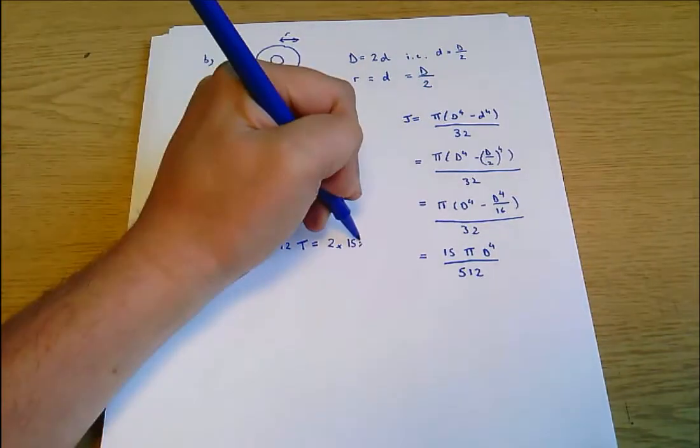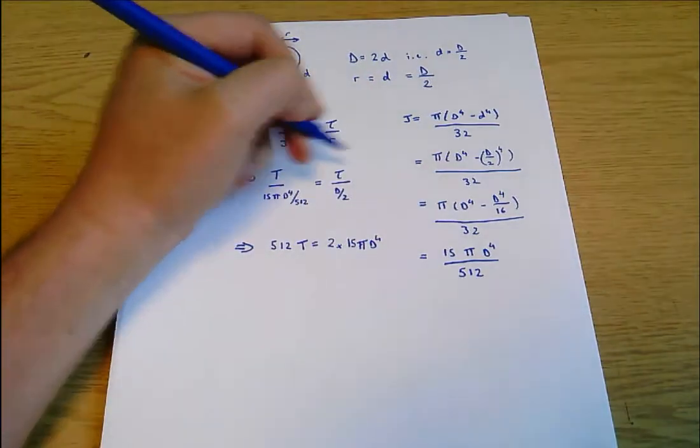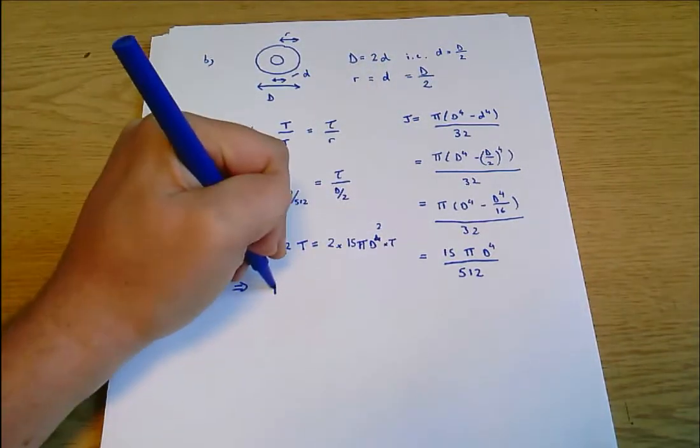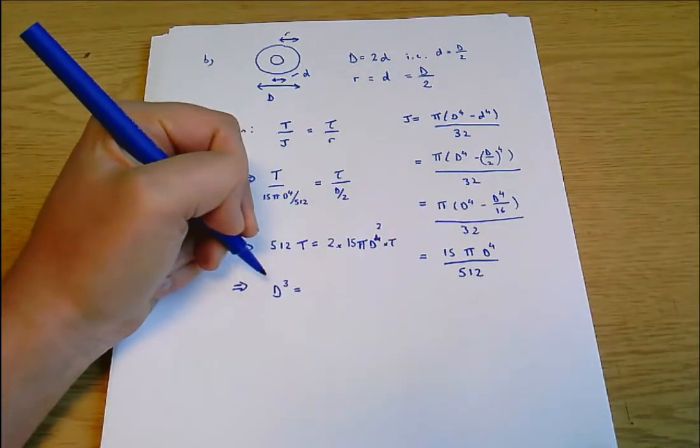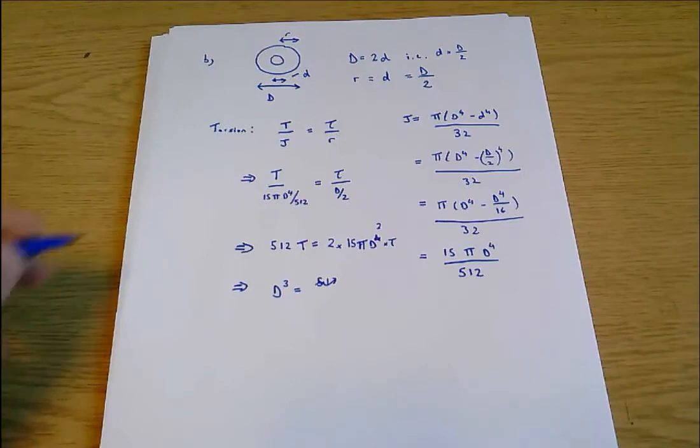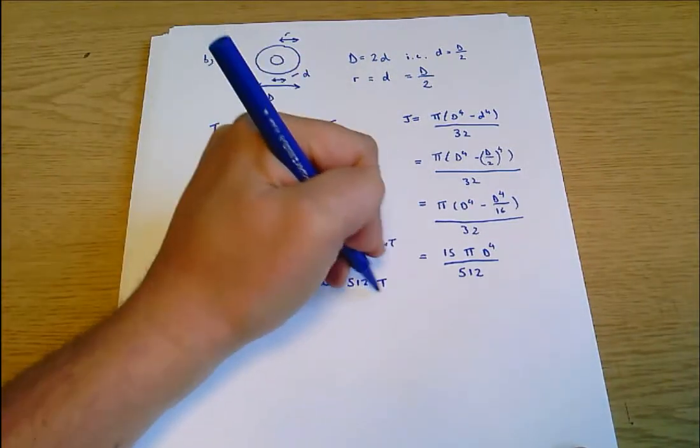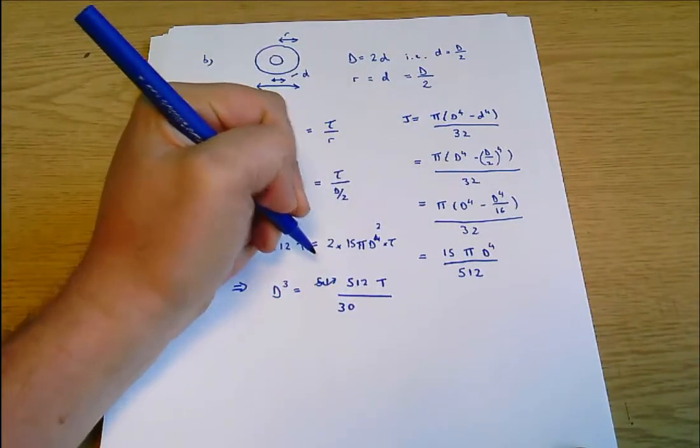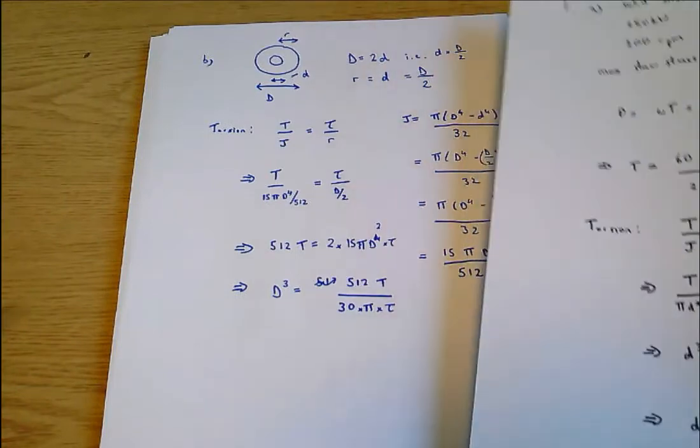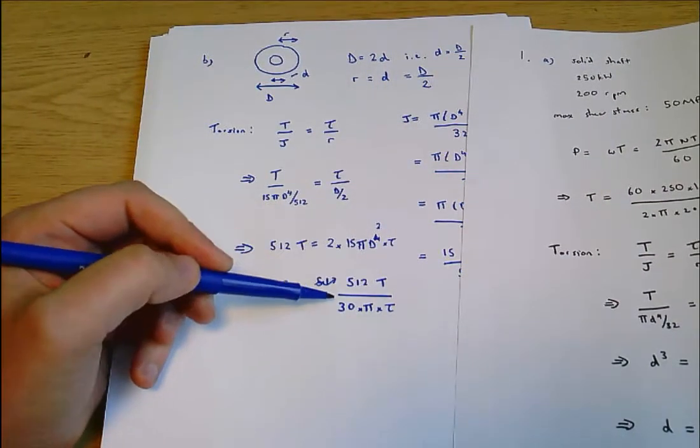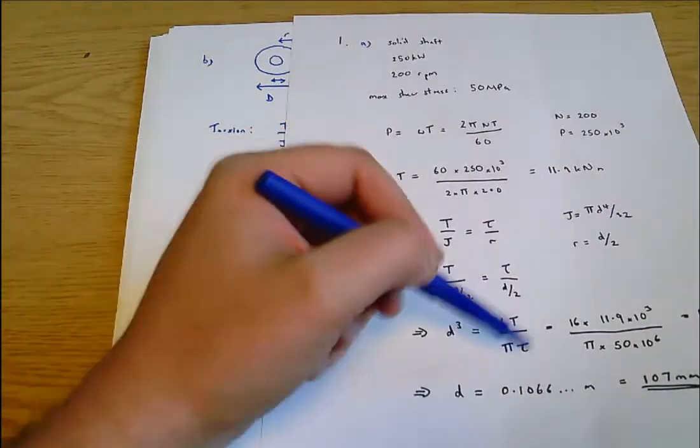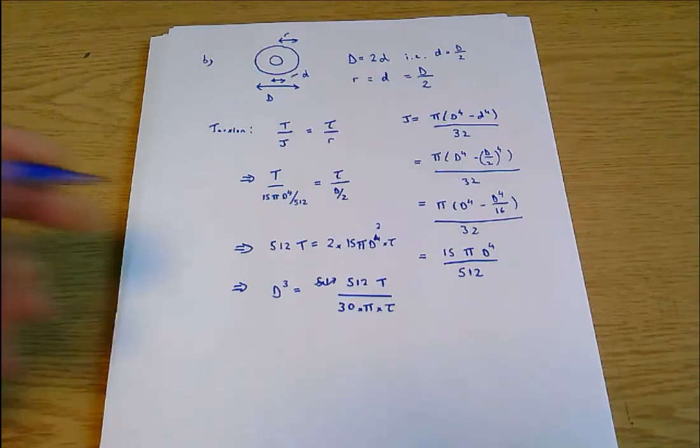So that eventually gives me D cubed, and I think then that gives me D cubed - this is large D cubed - equals 512t over 30π τ. One thing I can just check here: am I getting roughly the same number? Well 512 over 30 is about 16, so my answer here with the hollow shaft looks like it's going to give me something similar to my answer with the solid shaft and that's just kind of a nice confirmation that I'm on the right track.